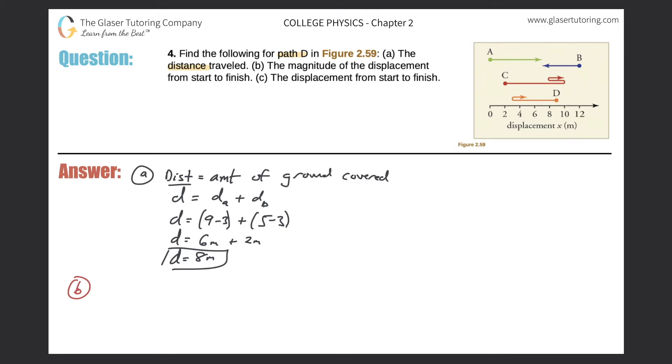So recall the formula that the change in displacement is equal to the final displacement value minus the initial displacement value. Since we're just concerned about the magnitude, we can take the absolute value of this because we don't care about the sign. So we're starting at 9 and we're ending at 5.